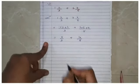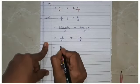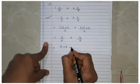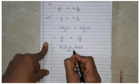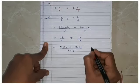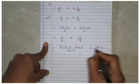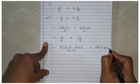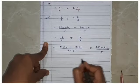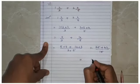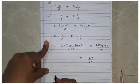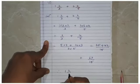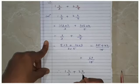Cross multiplying: (5 × 5 + 14 × 3) upon (3 × 5) = (25 + 42)/15 = 67/15. Therefore our final answer is 1²/₃ + 2⁴/₅ = 67/15.